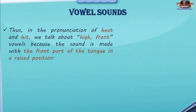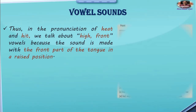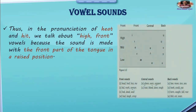In the pronunciation of 'heat' and 'hit', we talk about high front vowels because the sound is made with the front part of the tongue in a raised position. The vowel in 'heat' is a high front vowel, and the vowel in 'hit' is between high and mid front. These are the positions of these two sounds — high front vowels produced with the tongue raised at the front.